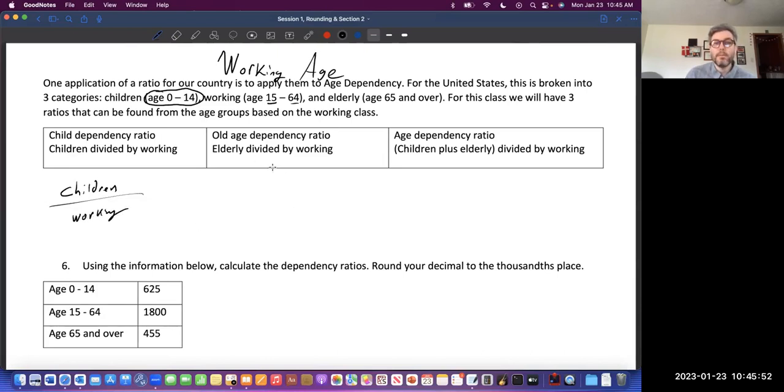The old age dependency ratio is going to be the elderly divided by the workers. And the age dependency ratio is the children plus the old age, child plus elderly divided by the workers.